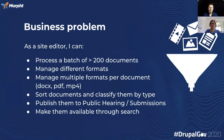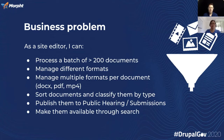Stating the business problem: they wanted to do batch processing of more than 200 files or documents, manage different file formats — each document might come in multiple formats: PDF, Word docs, MP4s, and so on. They want to sort through documents and classify them by type and publish them in different places depending on the type across the site. And of course, they've got to make all of that available through search.